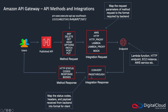In the integration response, you can either pass through — which is what happens when you use a proxy — or you can actually modify, convert, or transform that information. That includes mapping the status codes, headers, and the payload received from the backend into a format for the client. You can also modify HTTP status codes and response bodies in the method response.